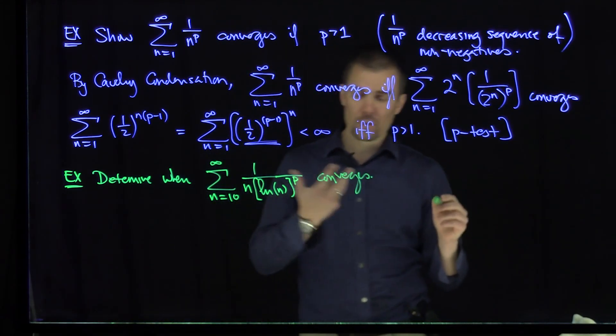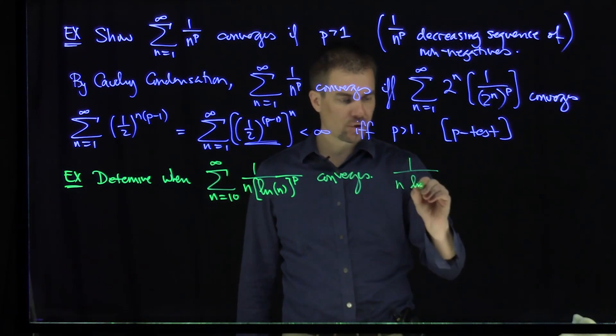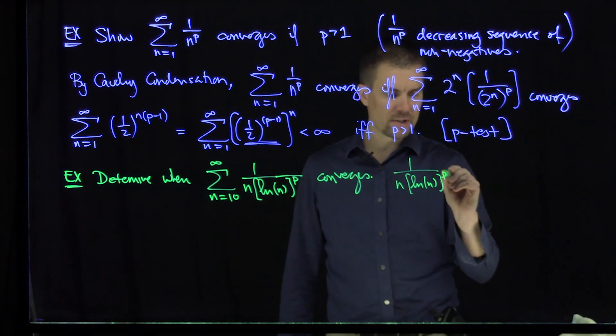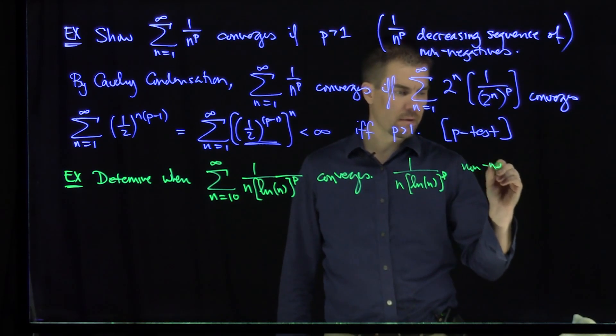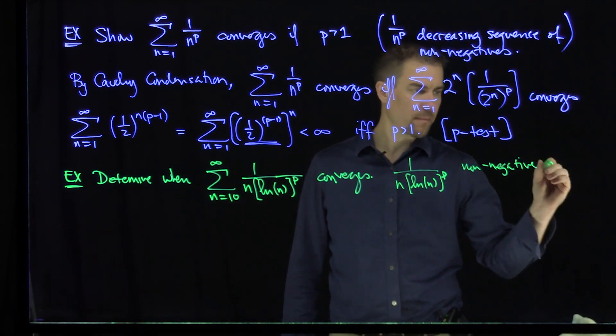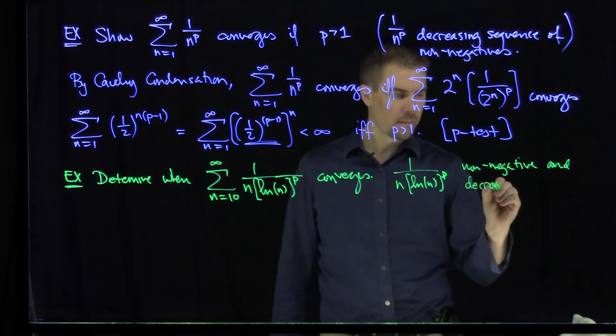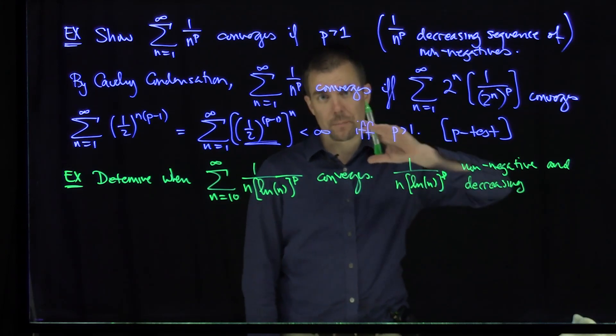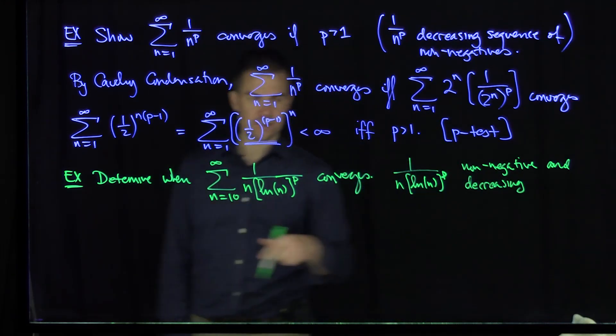Again, we're in a position to use Cauchy Condensation because 1 over n natural log of n to the power p is a non-negative sequence, is non-negative and decreasing. That just follows from the fact that the denominator is an increasing function. So when I reciprocate it, it becomes a decreasing sequence.